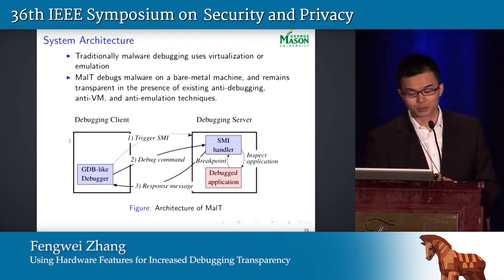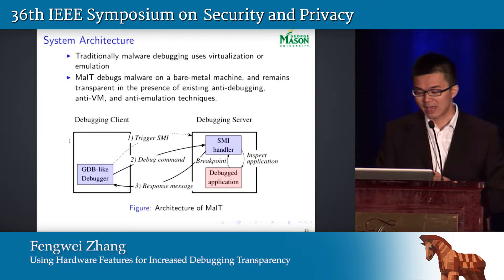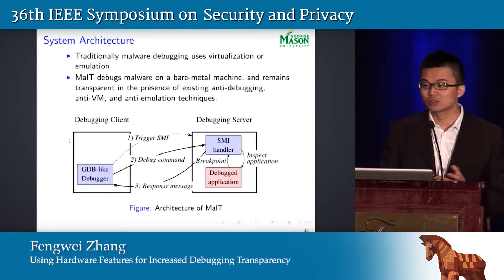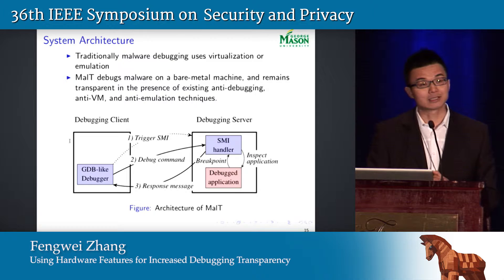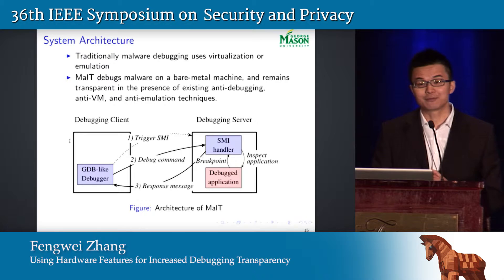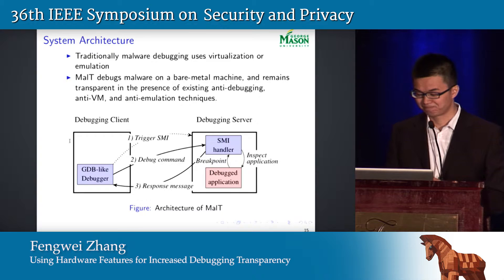The box on the left represents the debugging client, and the box on the right represents the debugging server. We run the debug application on the debugging server and use the SMI handler to introspect it. We also run a GDB-like debugger on the client side. When the client wants to start a debugging session, it sends a message to the debugging server to trigger a system management interrupt, then sends the debugging commands. When the SMI handler receives the debugging commands, it executes them and sends the response back to the client.